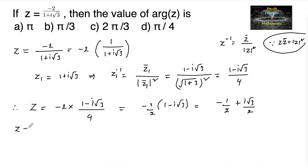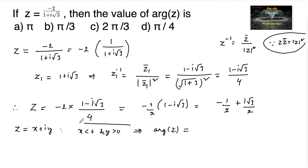Comparing with z equal to x plus i y, here x is negative and y is positive, which places z in the second quadrant. For the second quadrant, the argument of z is equal to pi minus tan inverse of mod of y by x.